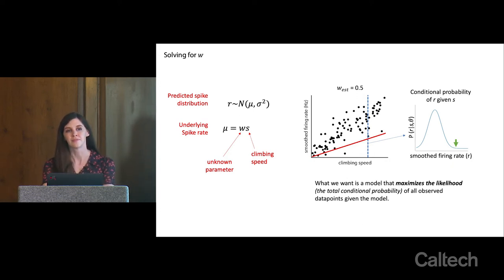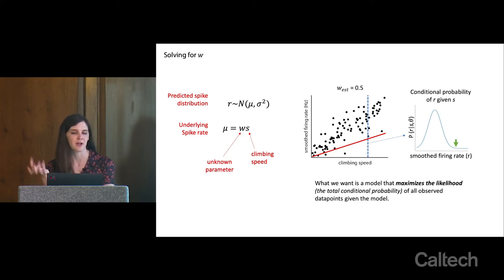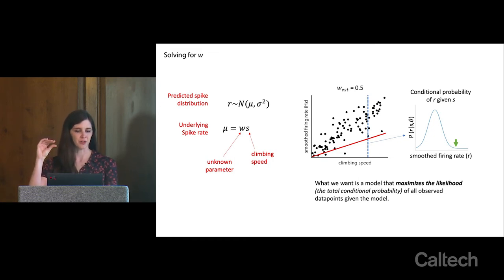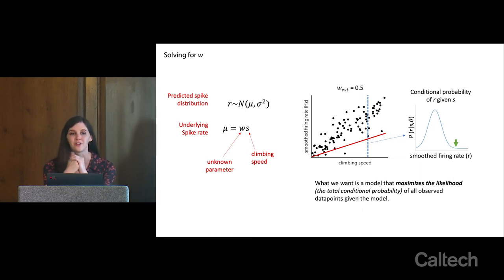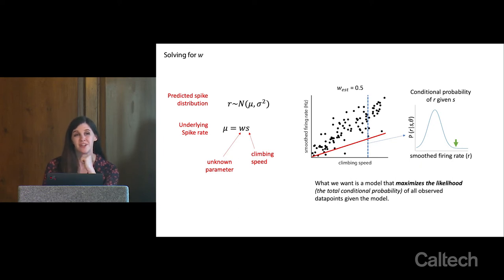A question about why the regression parameter isn't enough — what extra information does the variance give you? The variance gives you a sense of data likelihood. If you predicted firing rate better using a weighted combination of climbing speed and acceleration, you'd get a smaller sigma and higher data likelihood. Versus just regression, you'd compute mean squared error, but the likelihood is a different way of capturing how much variance is explained. In this case, really what you care about is fitting the mean — doing the regression.